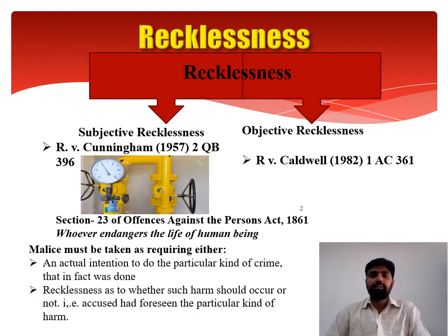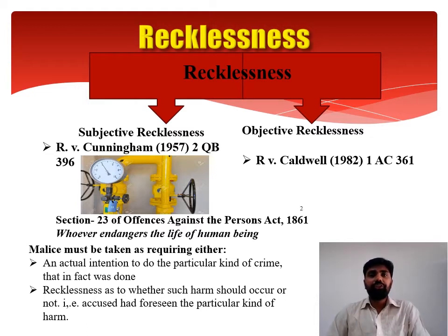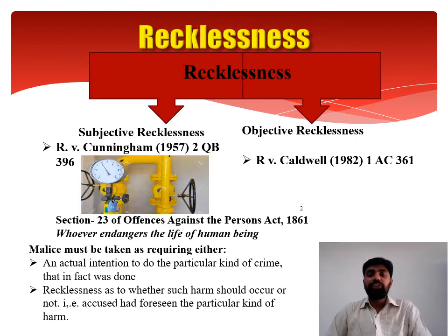The question is: what is subjective recklessness? Malice must be taken as requiring either an actual intention to do the particular kind of harm that was in fact done, or recklessness as to whether such harm should occur or not — meaning whether the accused could have foreseen the particular kind of harm. So foresightness of consequence and what was the intention of the accused at that point of time are two things to be taken into consideration while making the accused responsible.